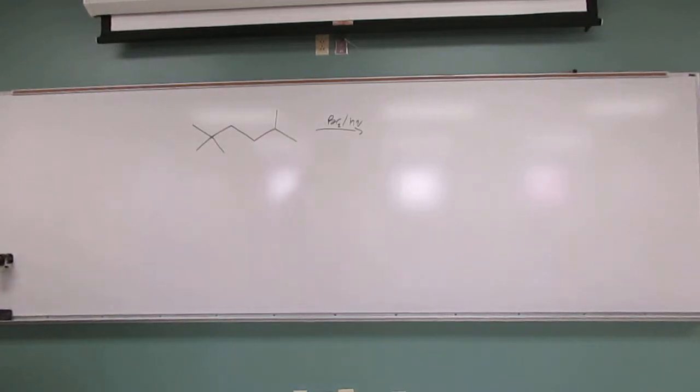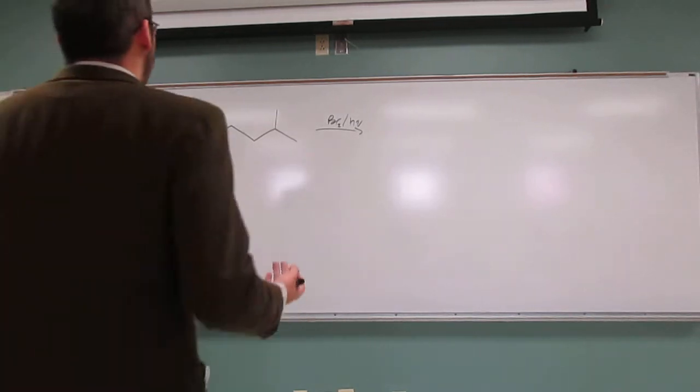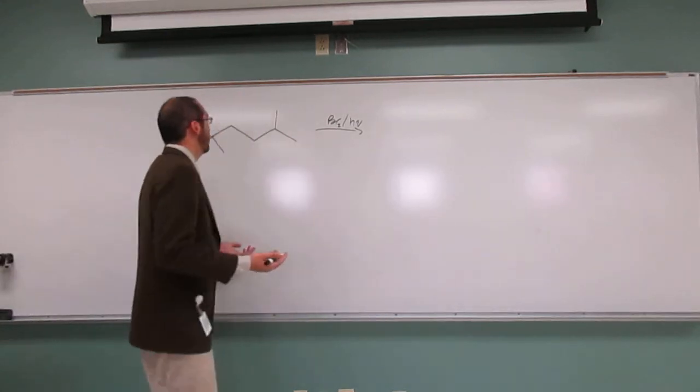So this one asks to draw the major product for the following radical reaction. I guess we can start there but I'd also like to do the mechanism for this reaction. So what is the major product? Can anybody tell me? Where should the bromine go?